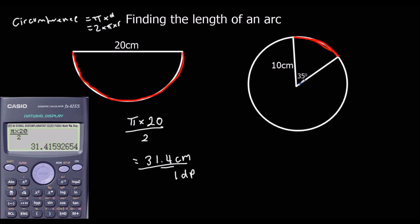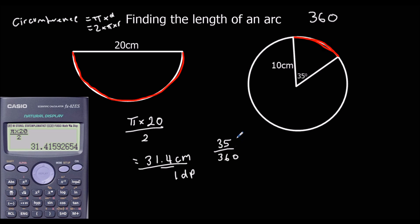We've got 35 degrees of the circle, and a whole circle is 360 degrees. So when we want to know what fraction of the circle we've got, it's 35 out of 360. We've got that fraction of the circle, and therefore that same fraction of the circumference.